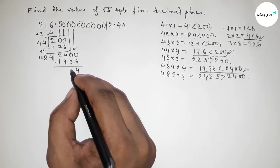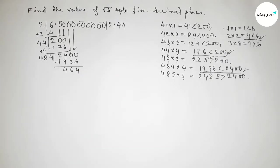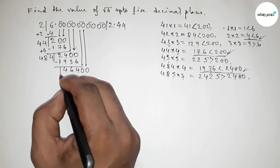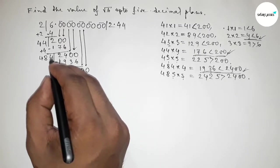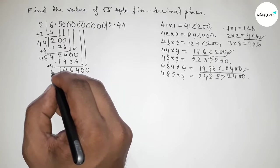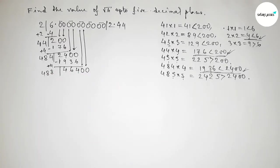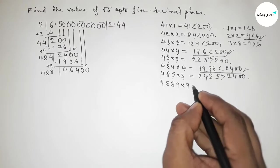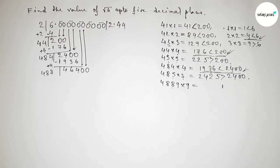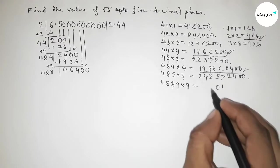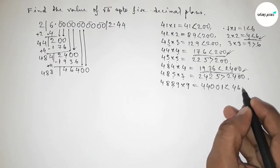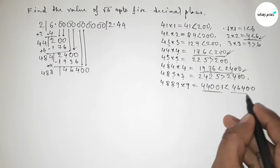Subtracting: 2400−1936=464. Bring down the next pair of zeros. Draw the division line. Last digit is 4, so add 4+4=8, giving 4884. Take a number beside this and multiply. You check 1 through 8 at home. Taking 9: 4889×9=44001, which is less than 46400. This is almost near and less than 46400, so we take 9.